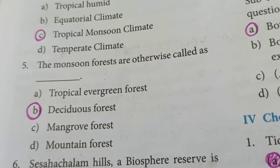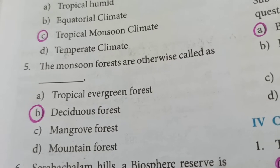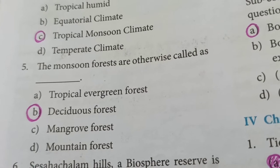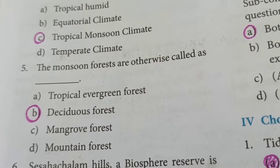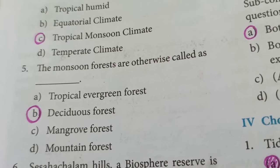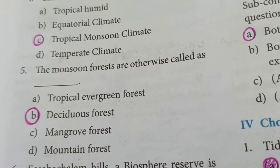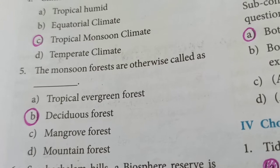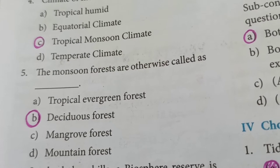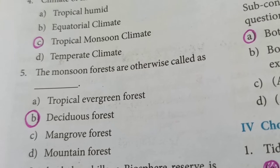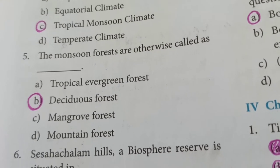Monsoon forests are otherwise called as deciduous forests. Deciduous forests shed their leaves during the summer season and are full of leaves during the rainy season. Monsoon forests are very green during the monsoon and drop their leaves during the dry season, so we call them deciduous forests.